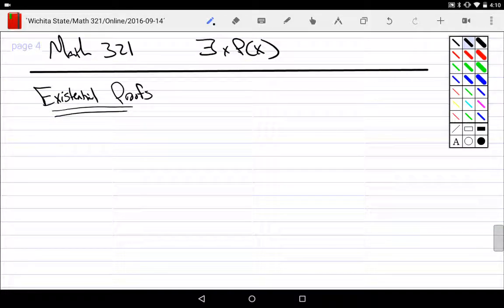Okay, the last one I want to talk about today is if I want to prove that there exists something that has a particular predicate, then how would I go about doing that?